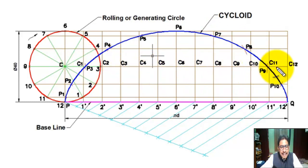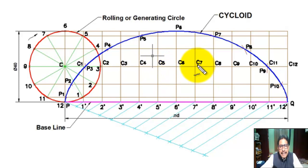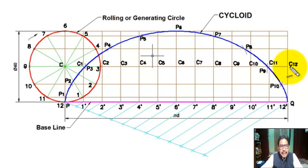These perpendicular lines intersect the horizontal line through center C at points C1, C2, C3, C4, C5, C6, C7, C8, C9, C10, C11, and C12. This series of points is called the locus of the center.